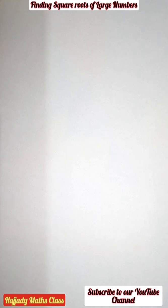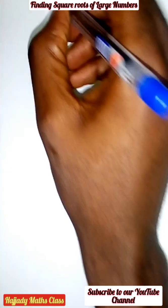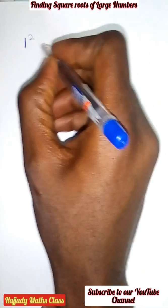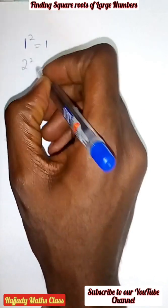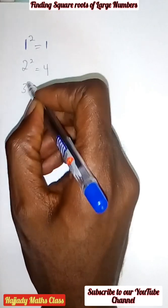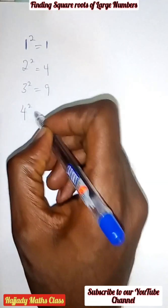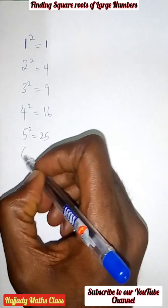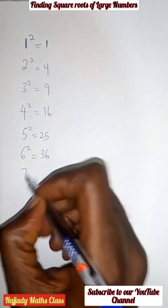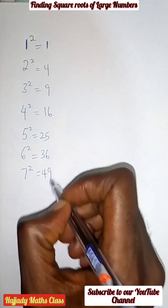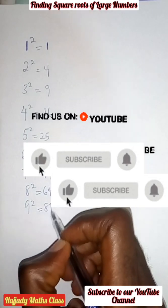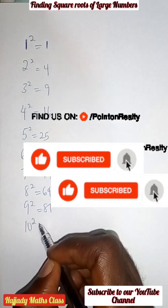Before we proceed, there is a need for us to revise the values of the perfect squares of numbers. One squared is one, two squared is four, three squared is nine, four squared is sixteen, five squared is twenty-five, six squared is thirty-six, seven squared is forty-nine, eight squared is sixty-four, nine squared is eighty-one, ten squared is one hundred.